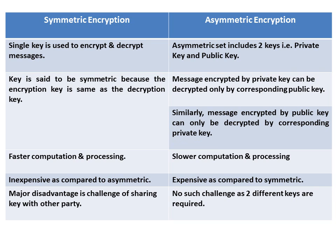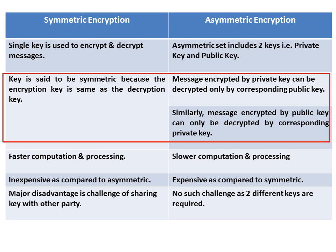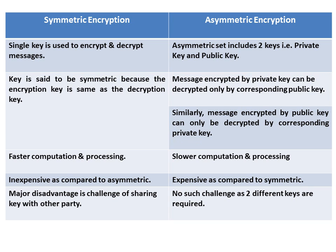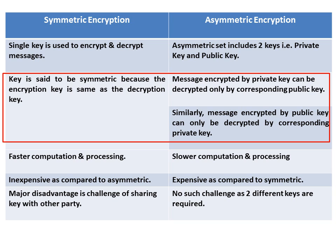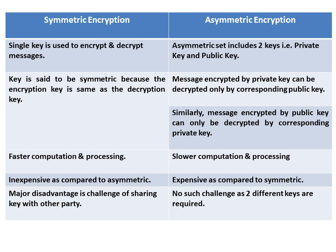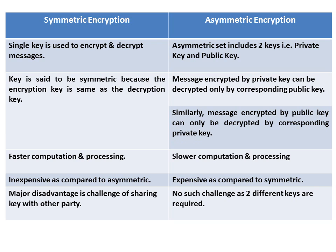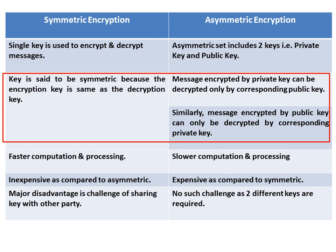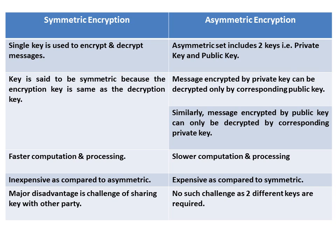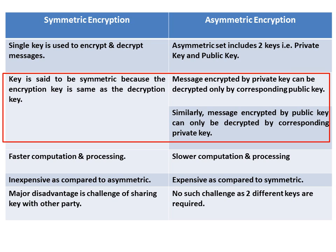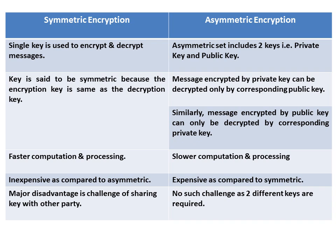In asymmetric encryption, a message encrypted by the private key can only be decrypted by the corresponding public key. Similarly, a message encrypted by the public key can only be decrypted by the corresponding private key.